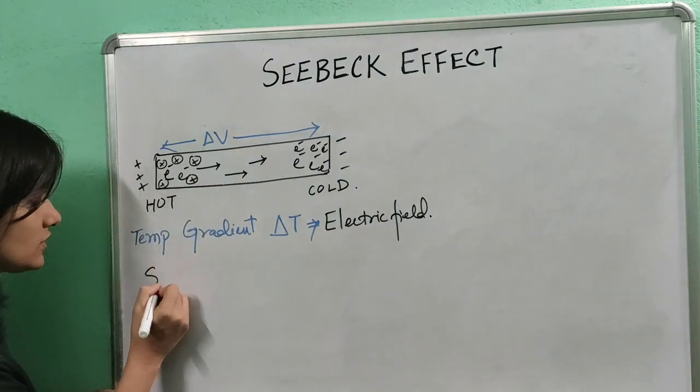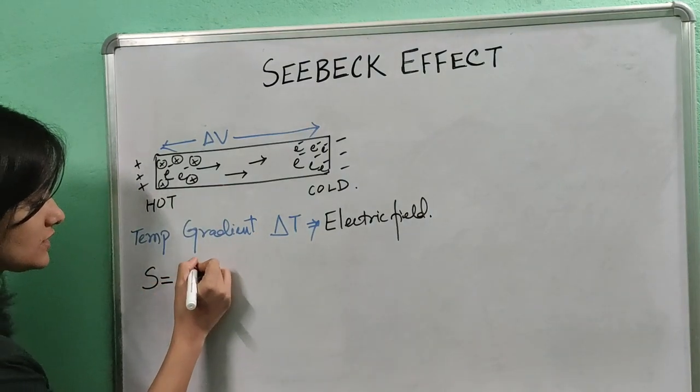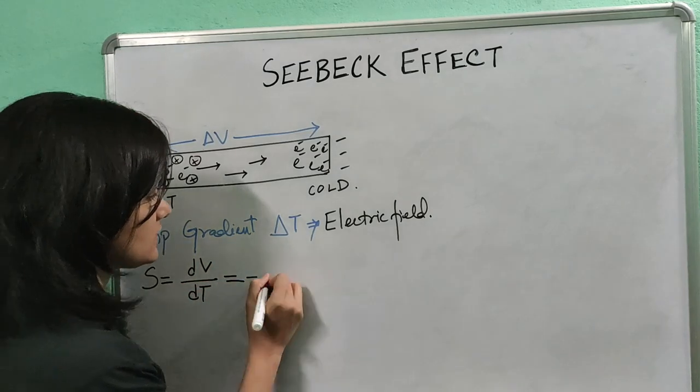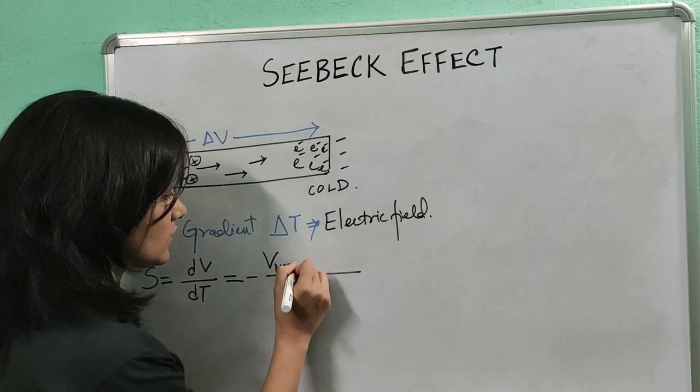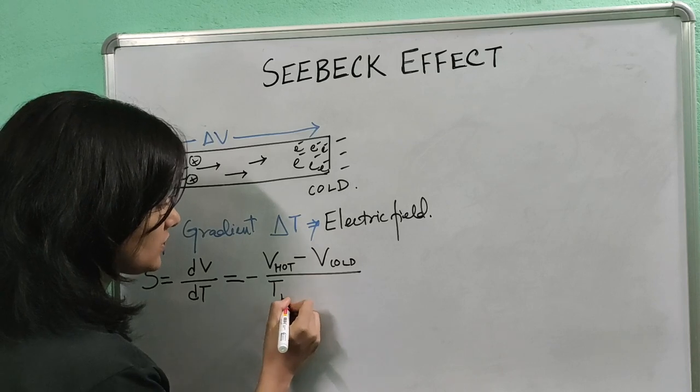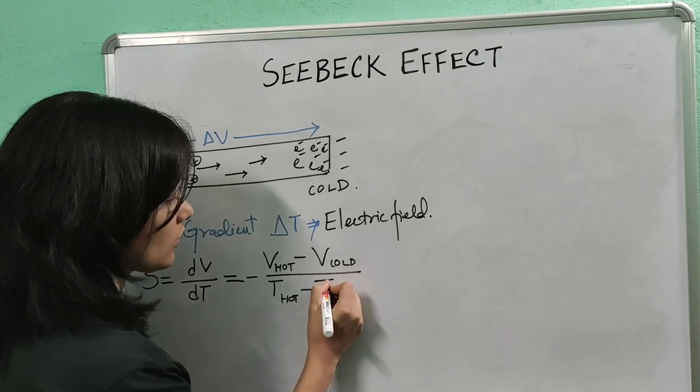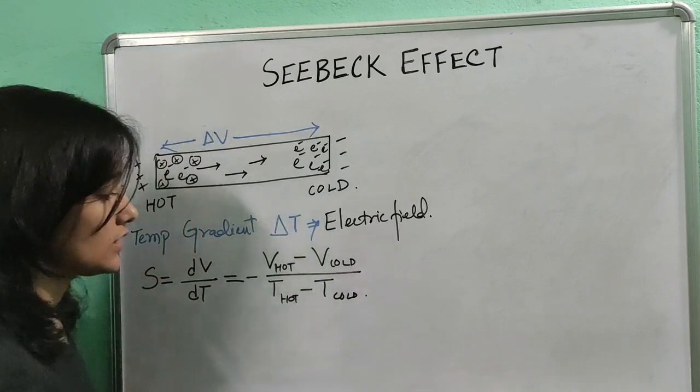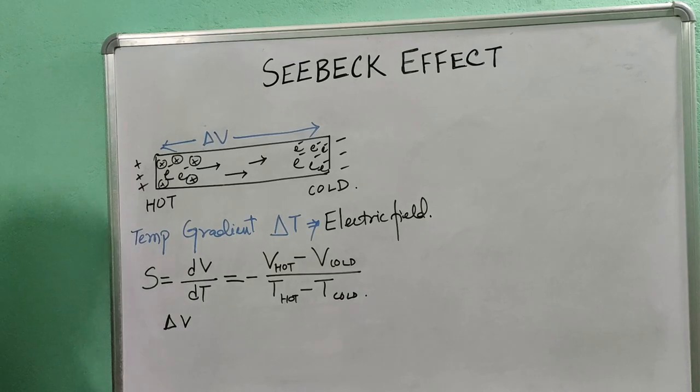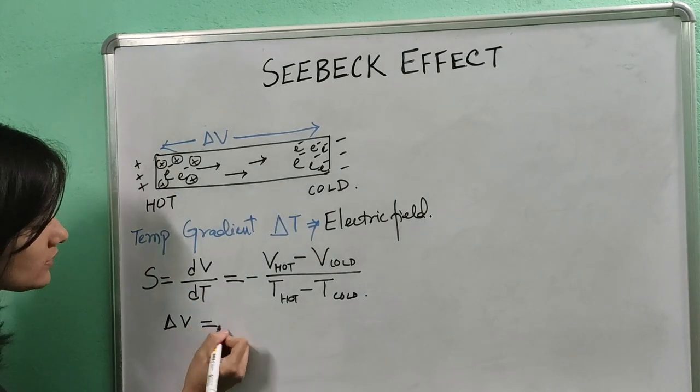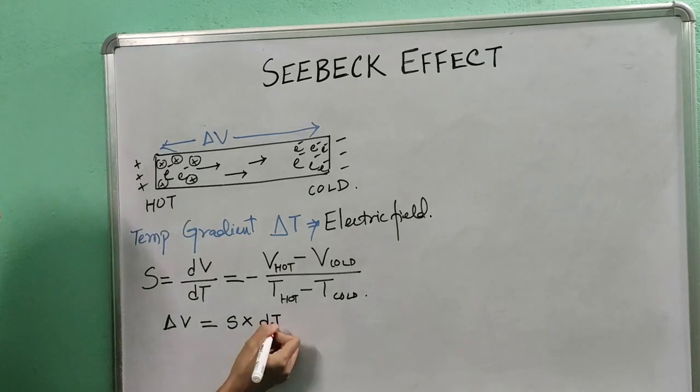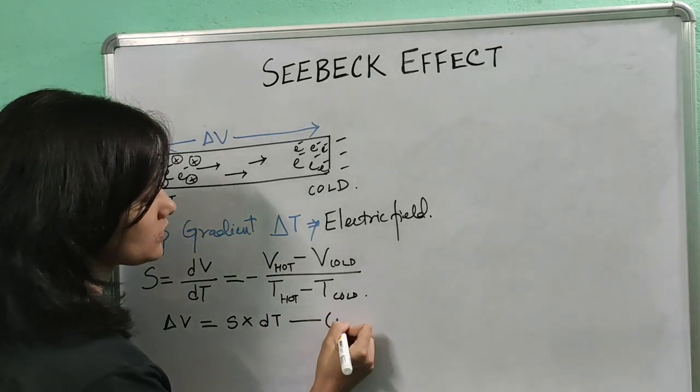Mathematically, the Seebeck coefficient is given by S equals dV by dT. It can also be written as the difference of the voltage between the hot and the cold region divided by the temperature difference between the hot and the cold region. From here we can write that delta V, the voltage generated across the two ends of the metal, is equal to the Seebeck coefficient multiplied by dT.